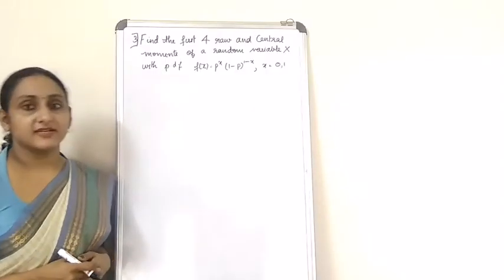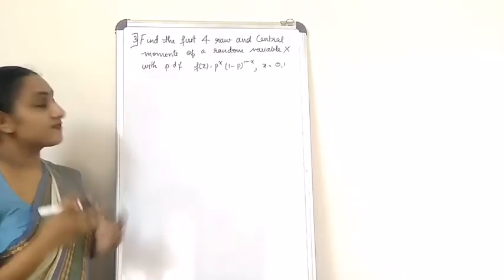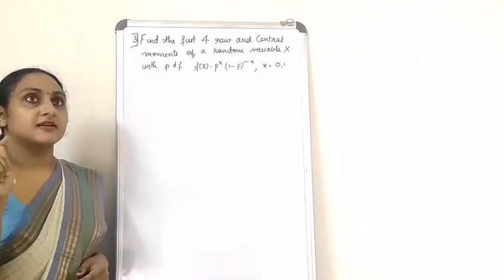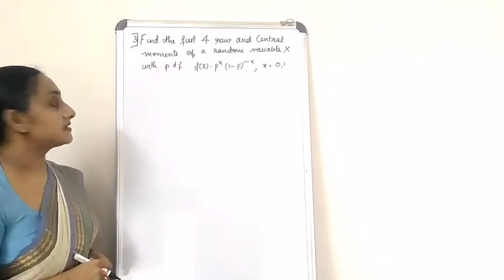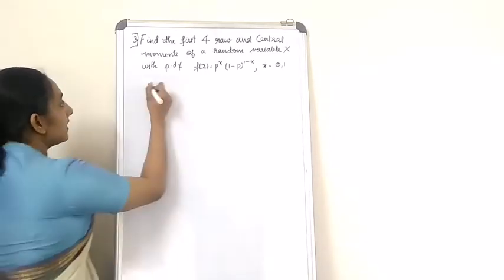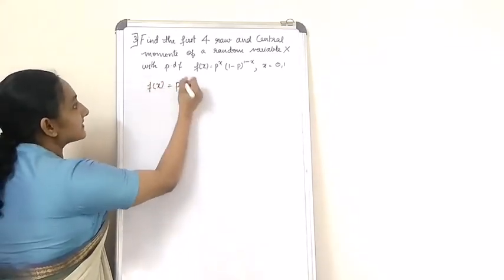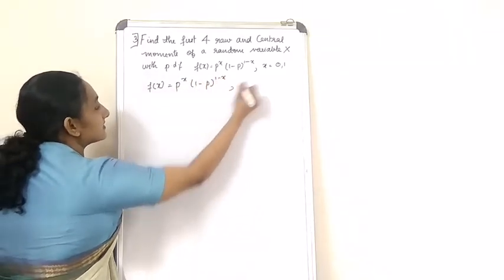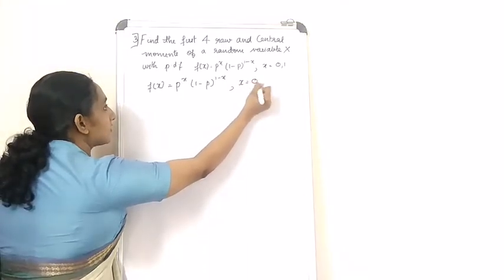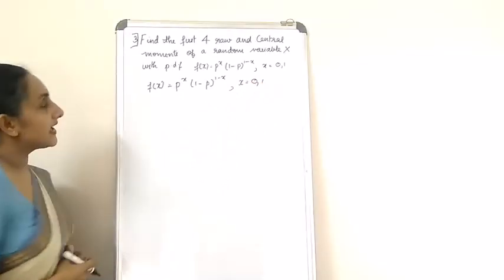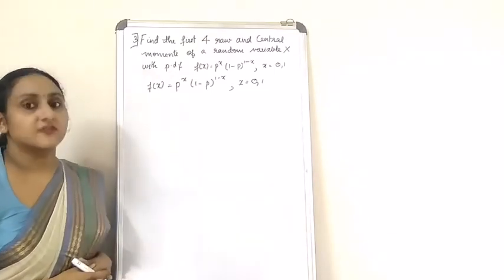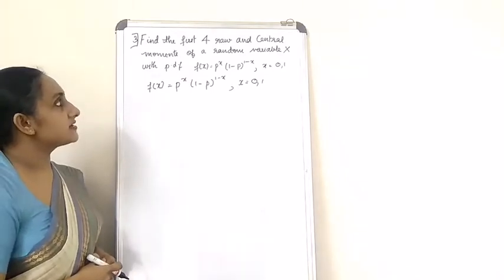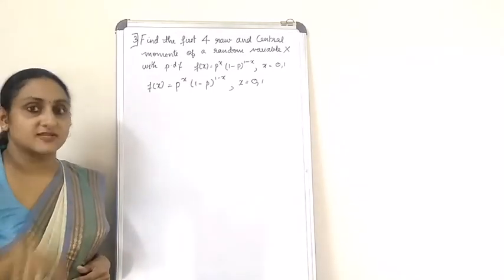The next problem is to find out the first four raw moments and central moments of a random variable x. The PDF is given as f(x) = p^x * (1-p)^(1-x), with the condition that x is equal to 0 and 1. So x is clearly a discrete random variable. We will find out the first four raw moments and the first four central moments.